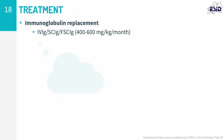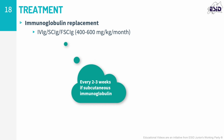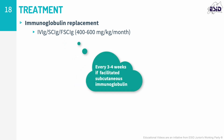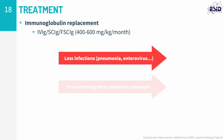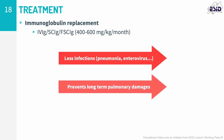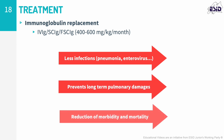Once a diagnosis of CVID has been made, immunoglobulin replacement therapy is the cornerstone of treatment. Polyvalent human immunoglobulins are administered by intravenous or subcutaneous routes, usually at a monthly cumulative dose of 400 to 600 mg per kg. Immunoglobulin replacement therapy reduces the incidence of severe pulmonary or systemic infections and can help prevent long-term pulmonary damage, but does not cure the biological defect in CVID. GI infections and non-infectious complications are relatively unaffected by immunoglobulin therapy, and it is not known to alter malignancy development or impact granulomatous disease.